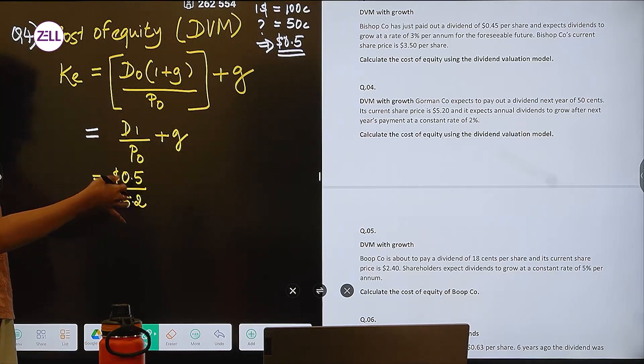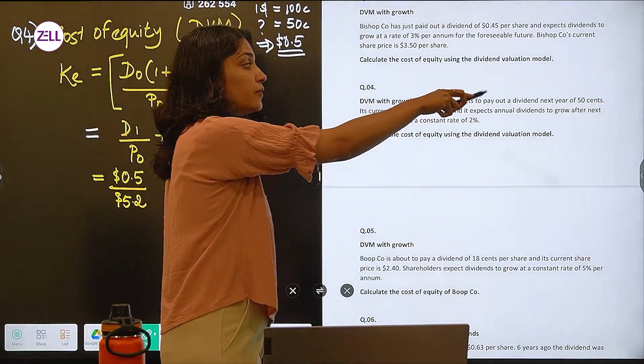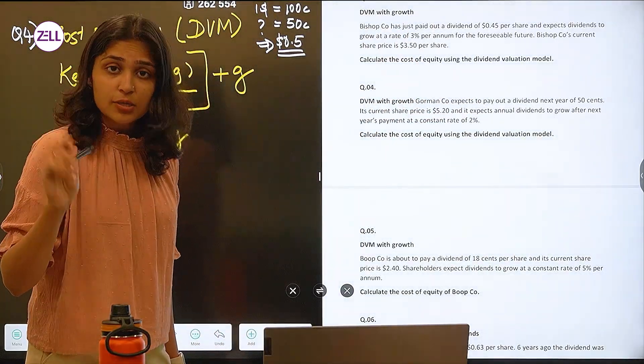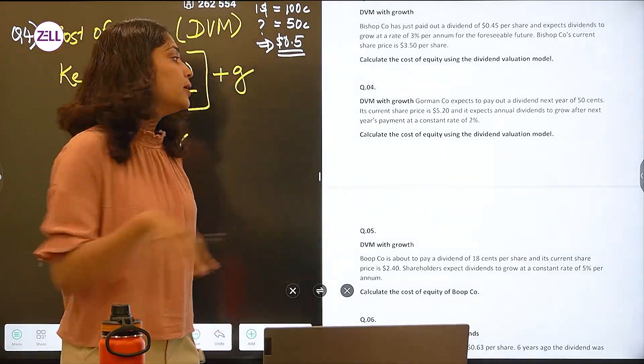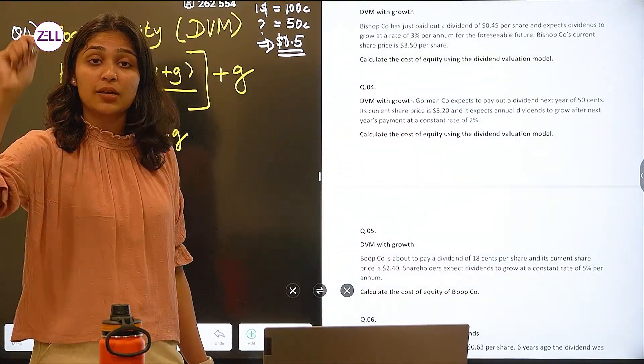So this is my ex-dividend market share price. Why do I say that this is my ex-dividend market price of the share? Because they are saying it is going to pay out dividend next year of 50 cents. That means current dividend is already paid. So if the dividend is already paid, then whatever is the share price, that is your ex-dividend market price of the share.